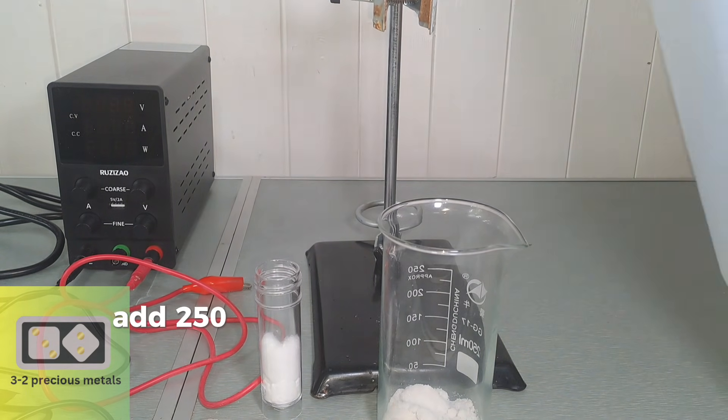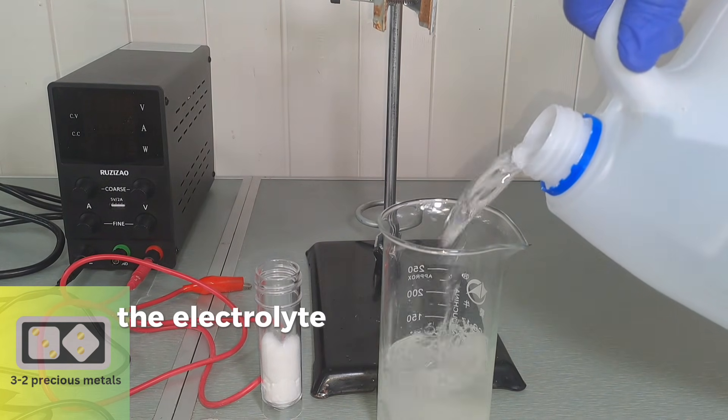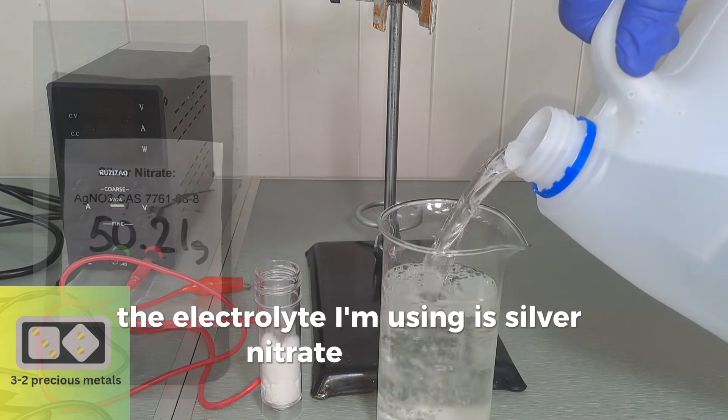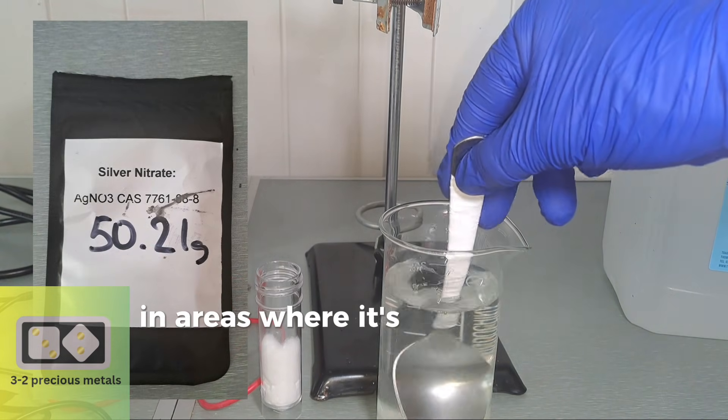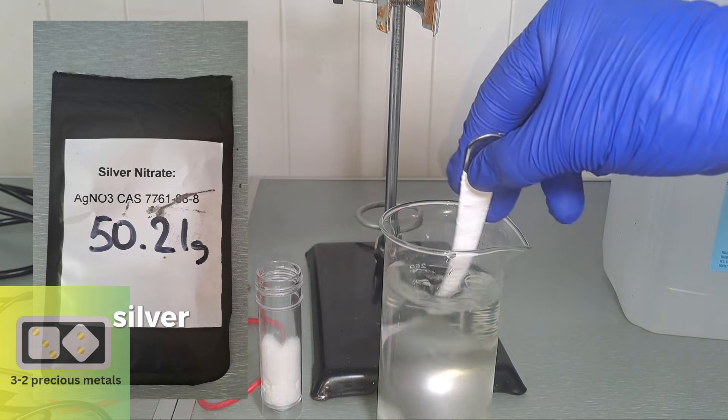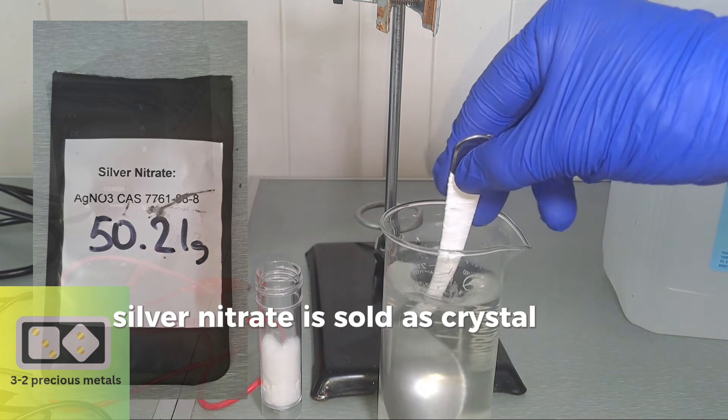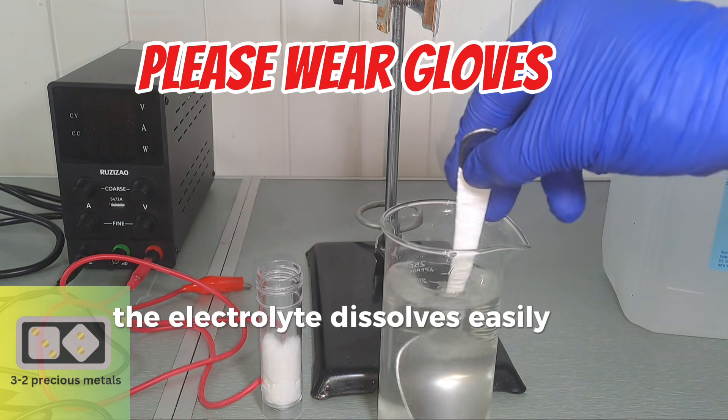I'll use this to dissolve the electrolyte. Add 250 milliliters of water to the electrolyte. The electrolyte I'm using is silver nitrate crystals. These crystals can be bought online in areas where it's difficult or expensive to buy nitric acid.